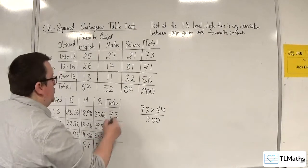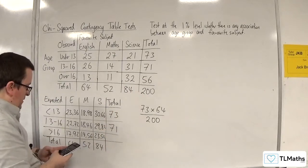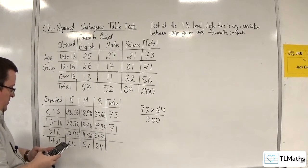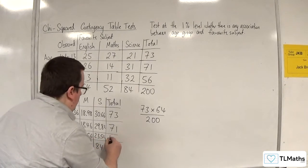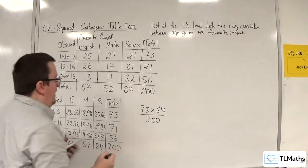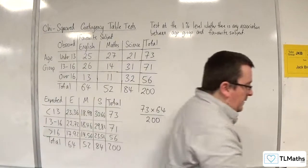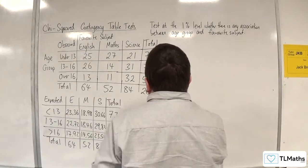We get 84, which matches that one. So I'm just going to do it in the row just as a final double check. And that's 56, which matches that one. So perfect. Okay, happy with that now. So that's my expected frequencies table.